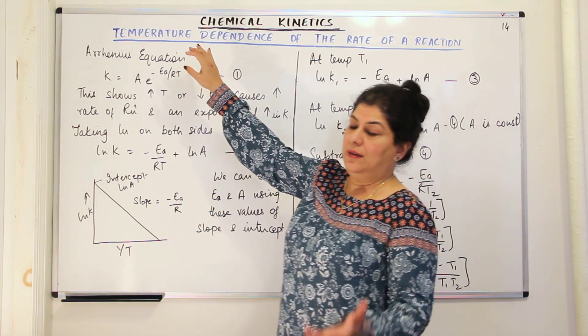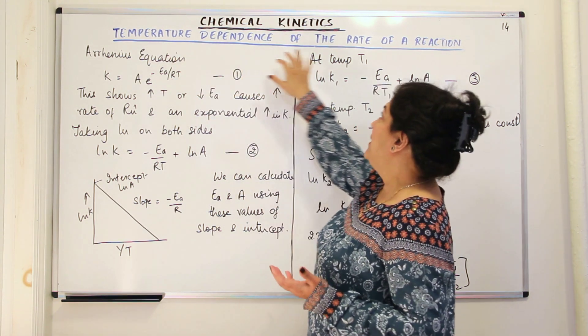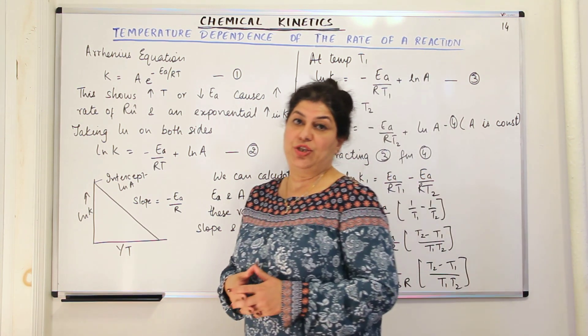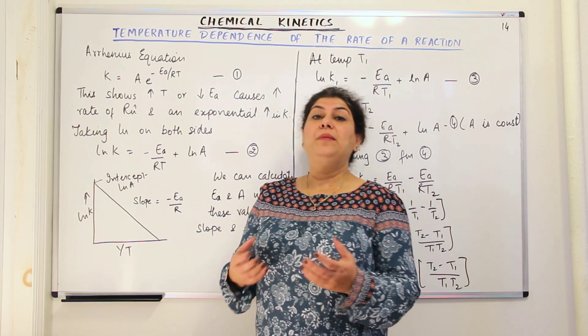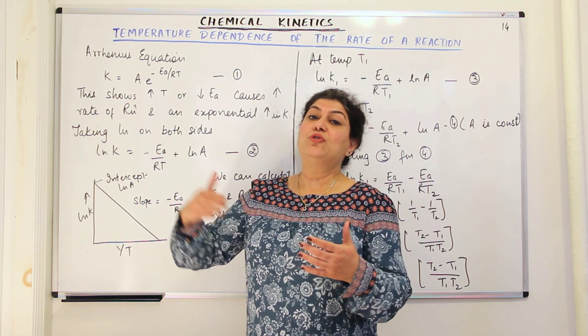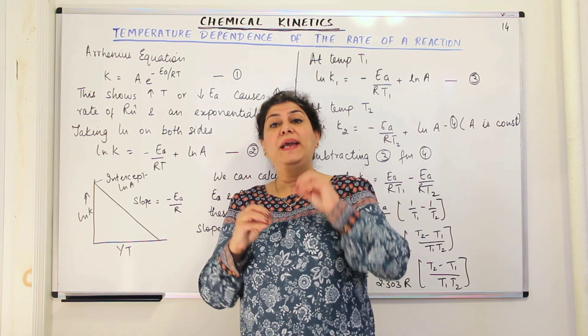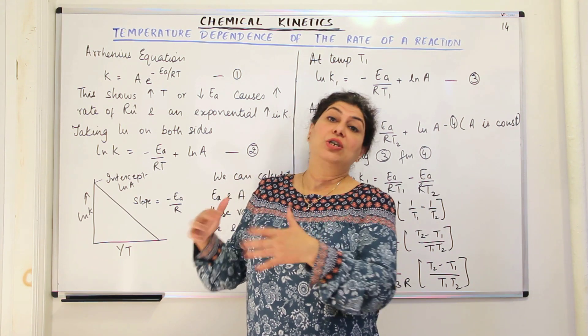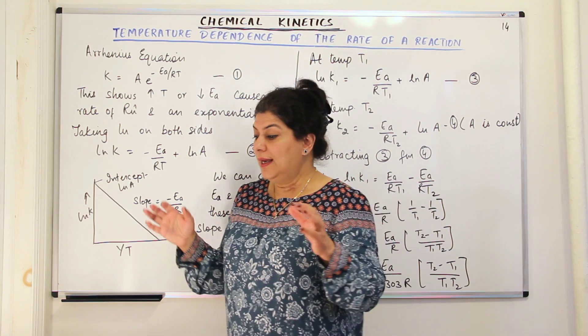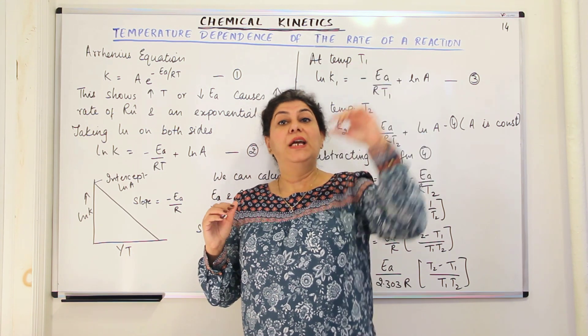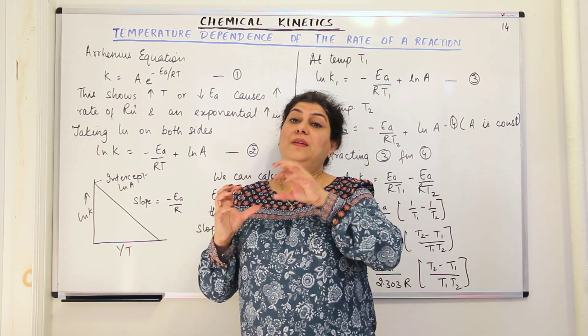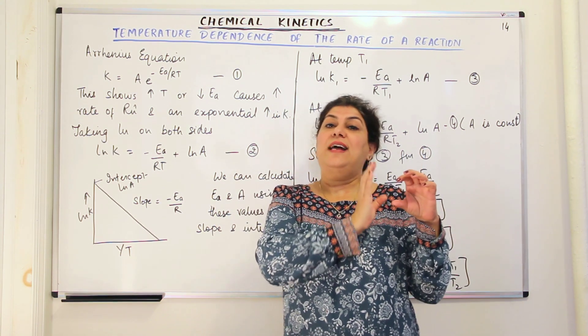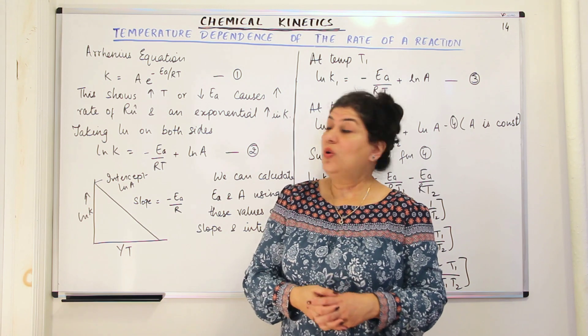The topic of this video, as the previous video, is temperature dependence of the rate of a reaction. In this, I explained the Arrhenius equation to you and I told you how Maxwell and Boltzmann, through their distribution curve, explained why just by increasing the temperature of a chemical reaction by 10 degrees, the rate constant doubles up. And I told you about the activation energy and how the fraction of molecules which have energy greater than activation energy doubles and therefore the rate also doubles.